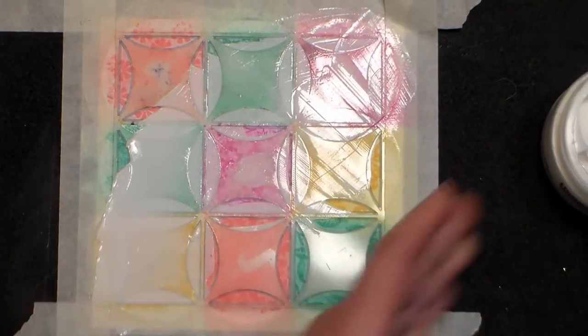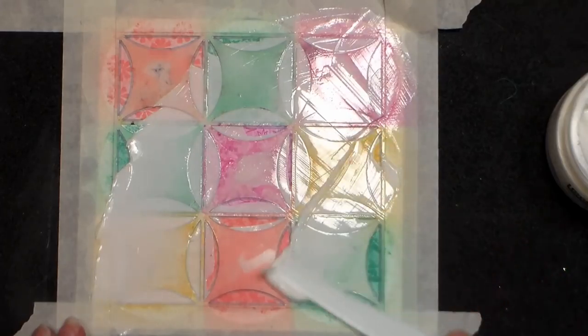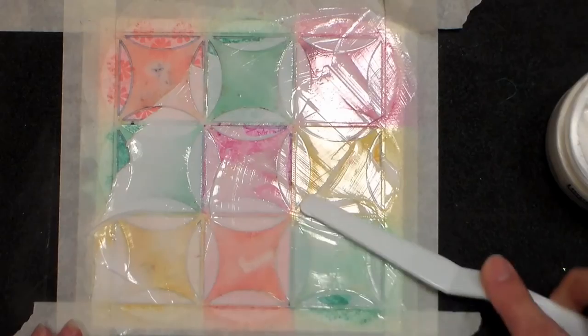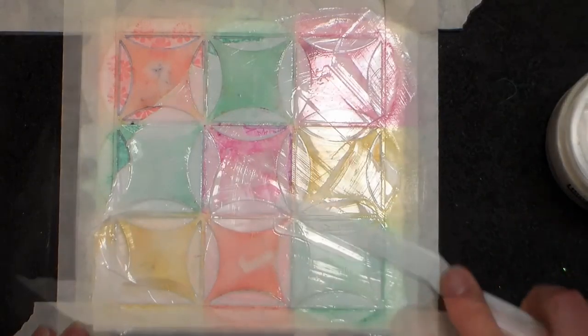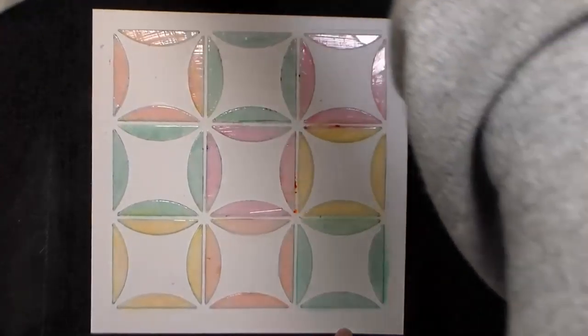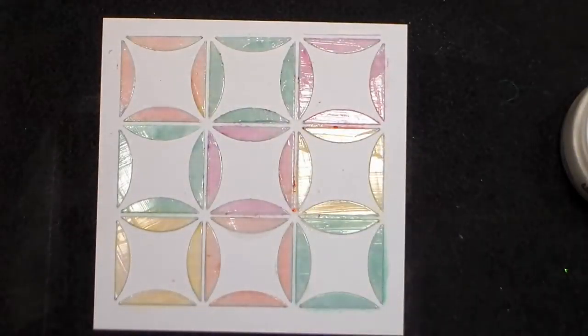I'm just using a palette knife to spread that across my stencil. You could also use an old gift card or anything that you could just kind of scrape easily with. Palette knives that are offset like this work really well. Now it looks milky because it's wet, but it's going to dry completely clear, so you just got to be patient and give it a couple hours to dry fully.